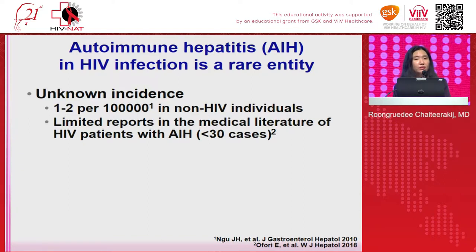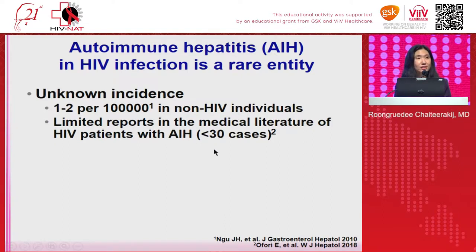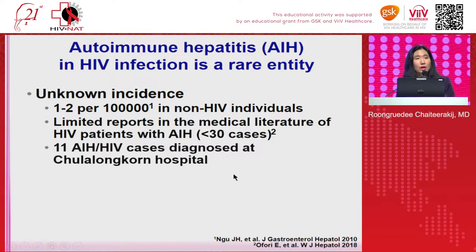Autoimmune hepatitis in HIV infection is actually a rare entity. We don't know the exact incidence of AIH in HIV infection. In the general population without HIV, the incidence is about 1 to 2 per 100,000 — very low. For HIV-infected patients, there are very limited reports in the literature — less than 30 cases. But I think this number might be underreported, because in my hospital, Chulalongkorn Hospital, during the past four years, we identified 11 HIV-infected patients diagnosed with AIH.